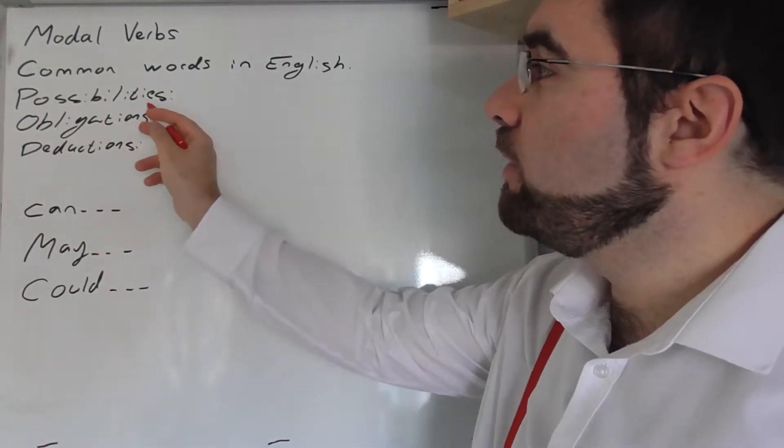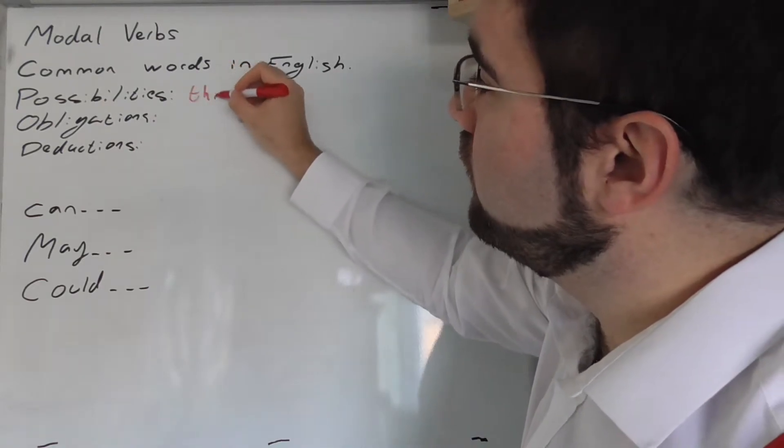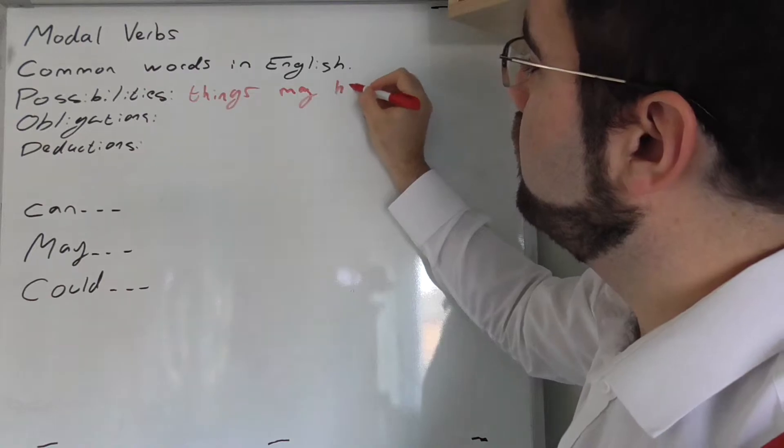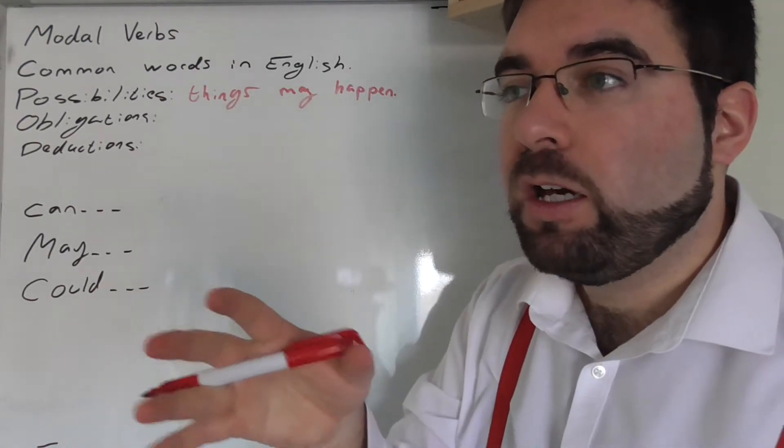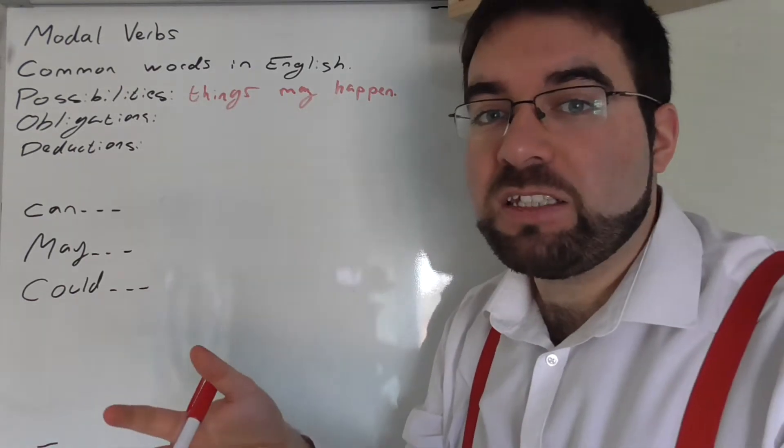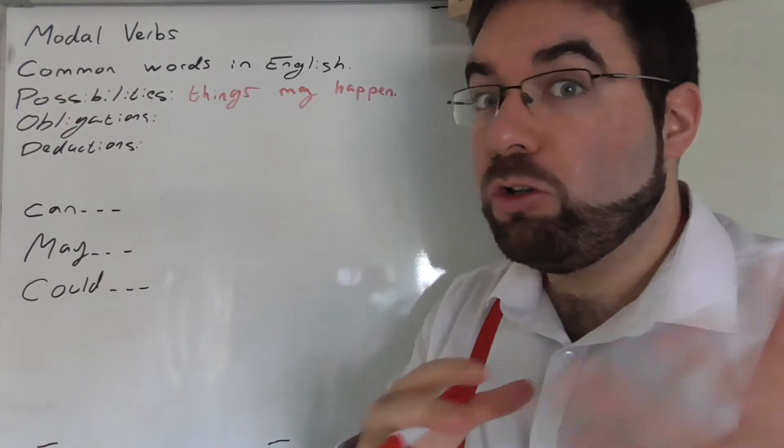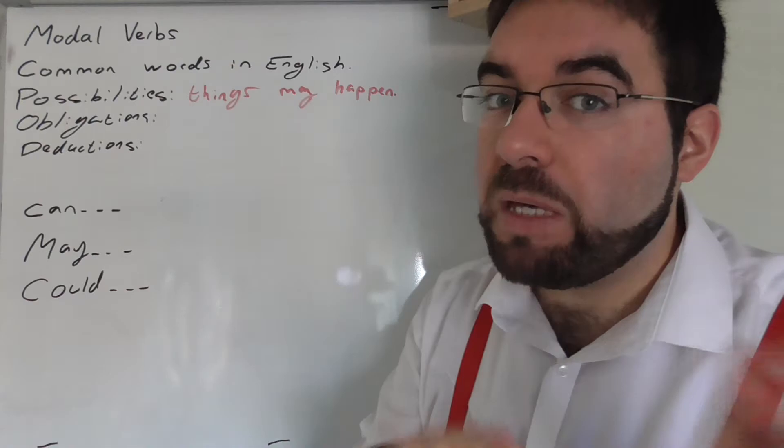So we talk about possibilities, things that may happen. It's possible, I might - it's a possibility. We could go to Spain or we could go to Mexico. I could learn French or I could keep learning Spanish.